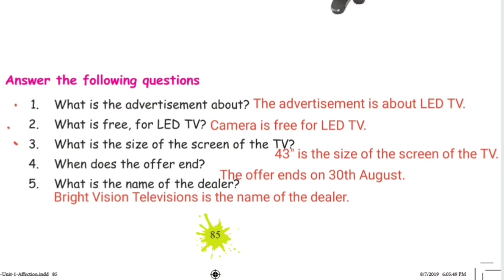Third: What is the size of the screen of the TV? The size of the screen is 43 inches. Fourth: When does the offer end? The offer ends on 30th August. Fifth: What is the name of the dealer? Bright Vision Television is the name of the dealer.